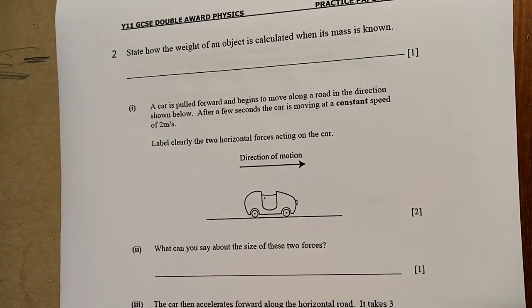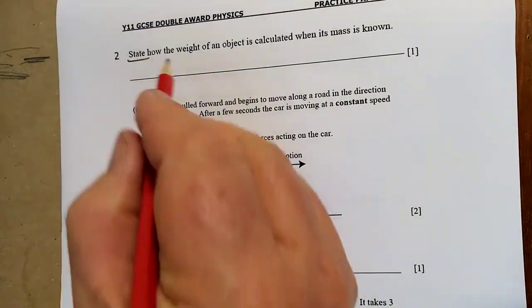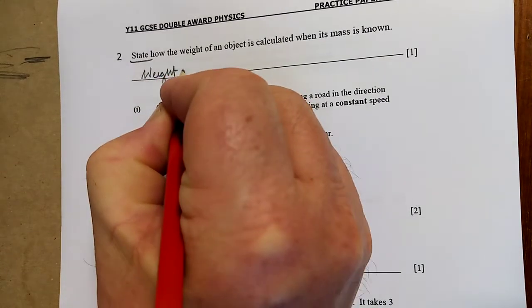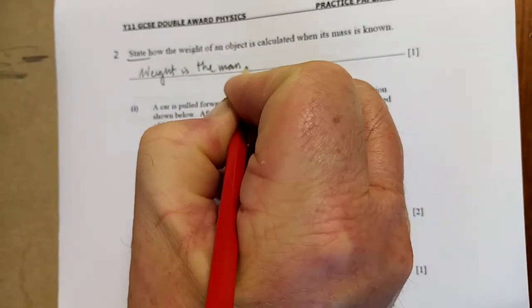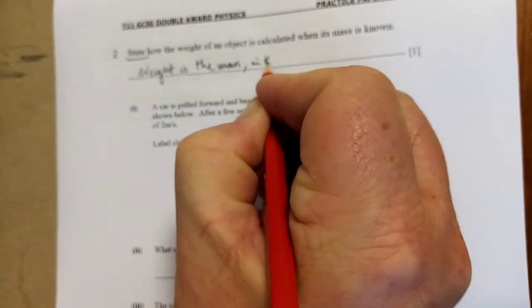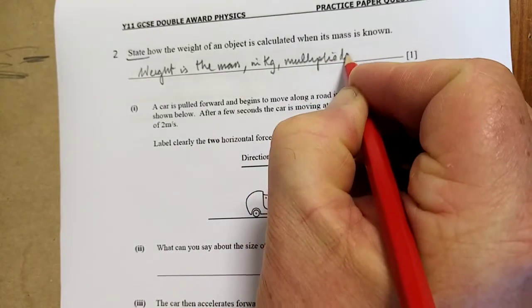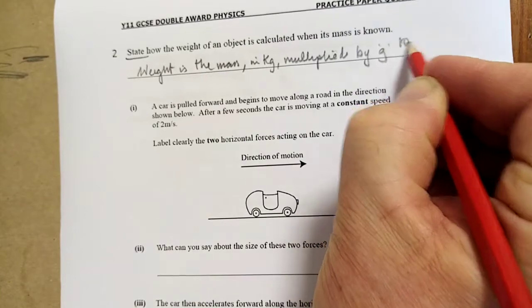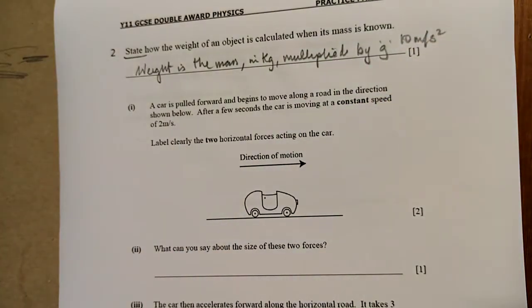State how the weight of an object is calculated when its mass is known. Weight is the mass in kilos multiplied by g, 10 meters per second squared. W equals mg might do, but better put in words.